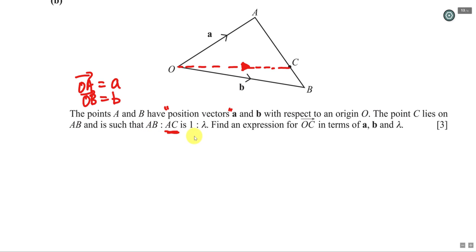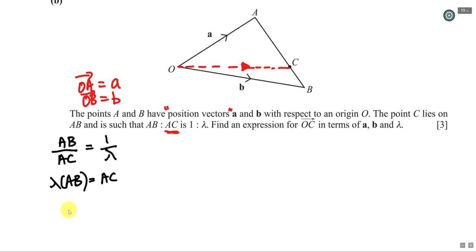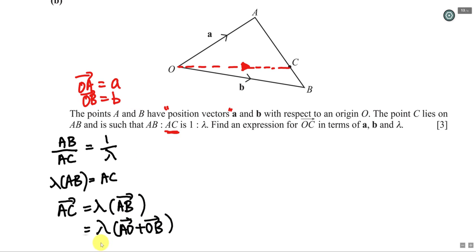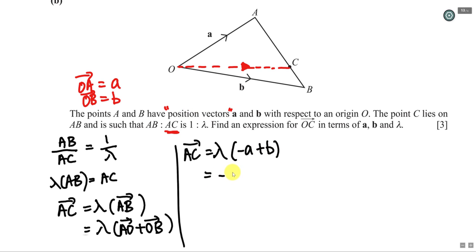To find OC, I'll use AC. First I convert the ratio into a fraction: AC/AB = 1/λ, so AC = λ·AB. Then I find AB using the triangle law: AB = AO + OB = -a + b. Therefore AC = λ(-a + b) = -λa + λb.